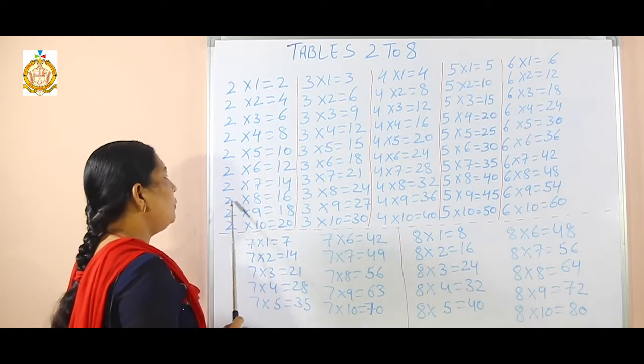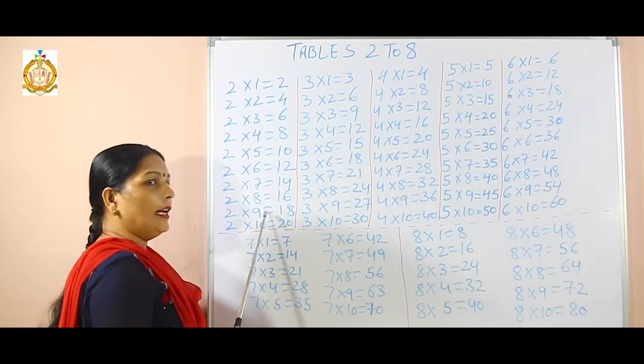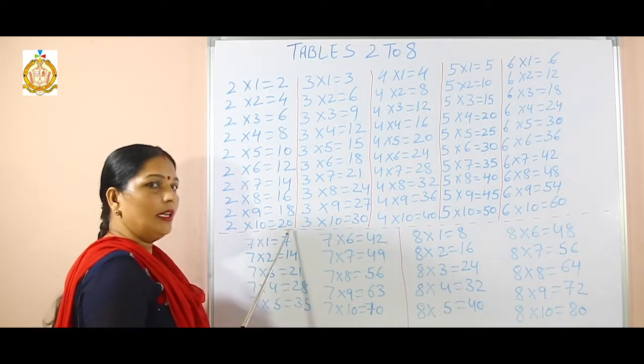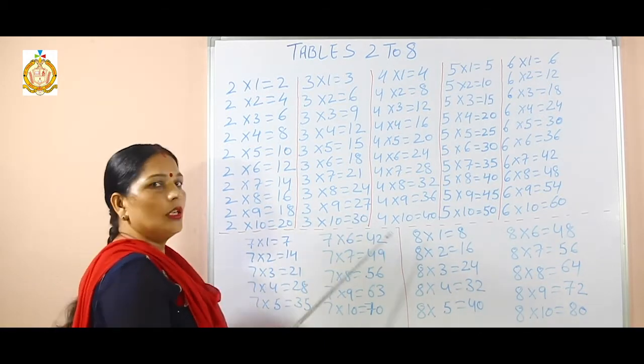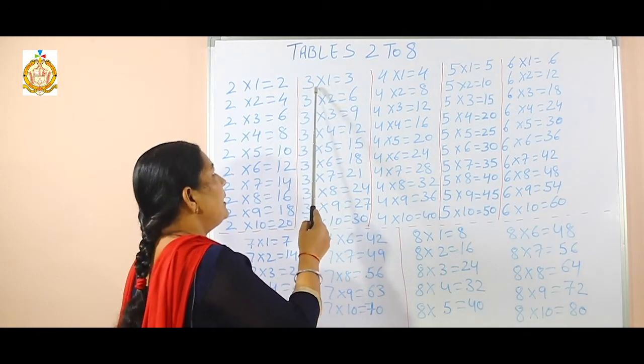2 eights are 16, 2 nines are 18, and 2 tens are 20. So next, table of 3: 3 ones are 3.